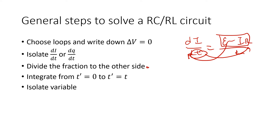Then you want to integrate from the initial conditions. For the RL circuit, since the inductor at t=0 always blocks current, you integrate from 0 to i(t) on the left. In the discharging case, if you know the initial charge on the capacitor, you integrate from that initial charge to q(t). Once you've integrated correctly — being careful with all negatives and constants — isolate your variable and solve. That's the general method for RC and RL circuits.